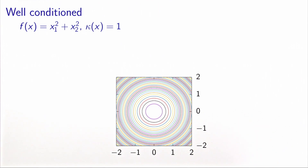Now if we take another example where the curvature is not the same in every direction, we see that the level curves are elliptic — these are ellipses. It means that the curvature in one direction is smaller than in the other direction. In this case, it can be calculated that one curvature is 10 times bigger. So the ratio between the largest and smallest curvature, which is the condition number, equals 10.